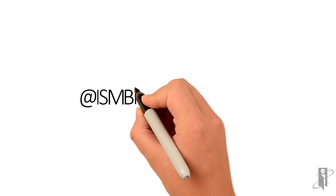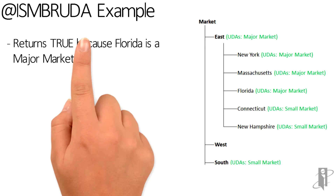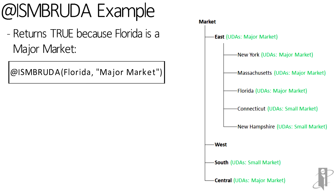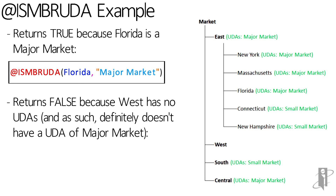So let's say we want to find out if Florida has the UDA of major market. We would just say isMemberUDA, Florida, comma, "major market" — and it is a string so it has to be in quotes. That'll return a true because Florida is a major market.